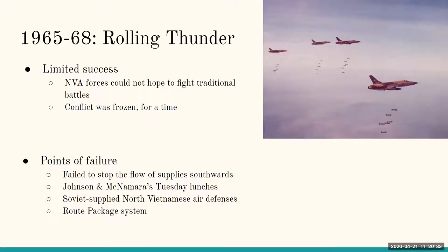Soviet-supplied North Vietnamese air defenses were top of the line. The Soviet Union had some of the best air defenses, and even today Russia still has incredibly good air defenses — that made it very difficult for American bombers to survive. Finally, the route package system: the inter-service rivalries between the Air Force and the Navy became a very big problem. The Navy and the Air Force, jointly sharing bombing targets, had divided all of Vietnam into route packages, where an Air Force pilot would need the Navy's permission to bomb a Navy target and vice versa. Permission was generally not granted, and the end result was a much less efficient bombing campaign.